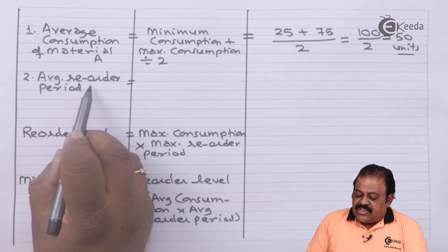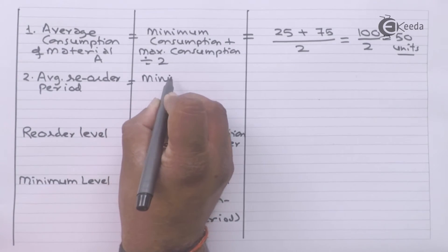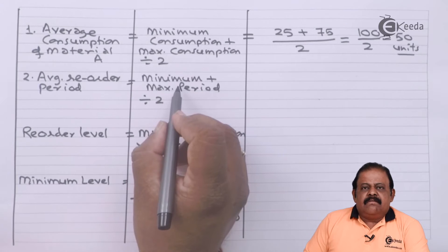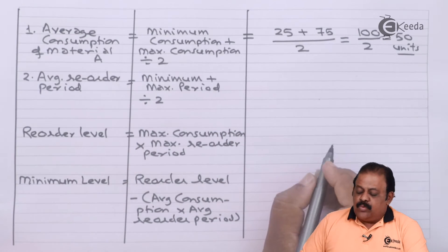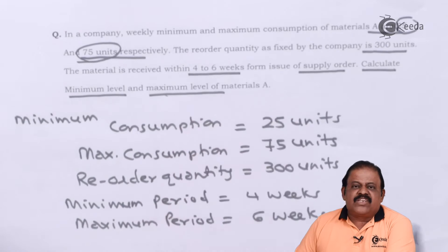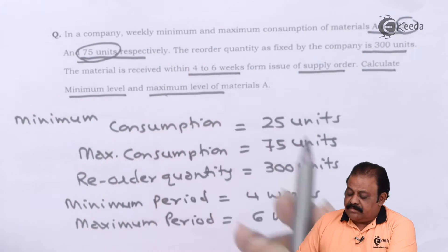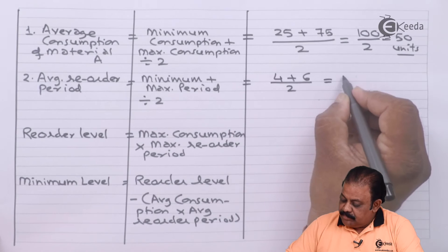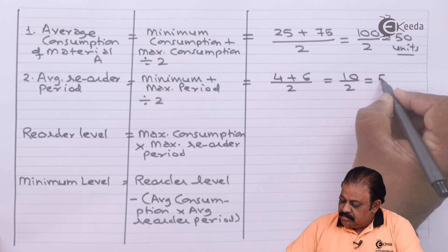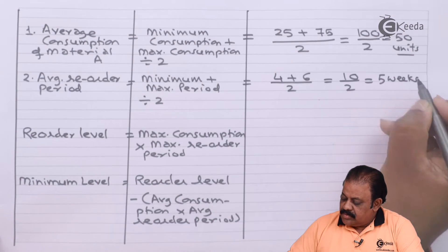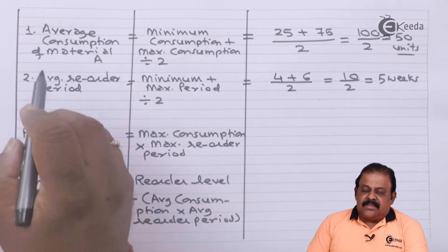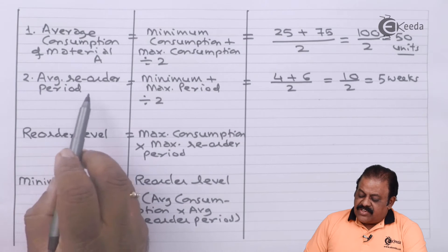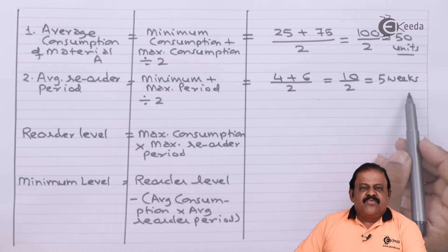Next, we find the average reorder period: minimum period plus maximum period divided by two. The minimum is four weeks and maximum is six weeks, so four plus six divided by two equals ten divided by two, which is five weeks. So average consumption is 50 units and average reorder period is five weeks.